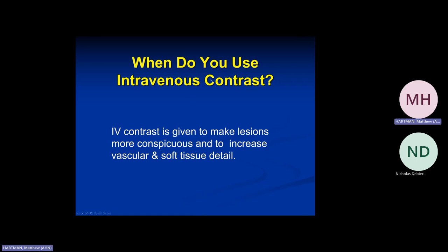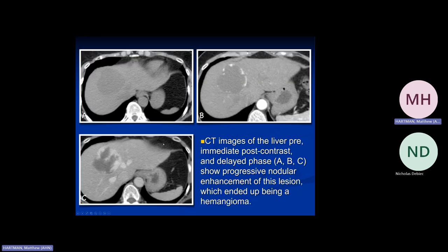When do you need intravenous contrast? Basically anytime you want a lesion or process to be more conspicuous, to increase vascular and soft tissue detail, or for anything vascular. Here is a liver lesion — hard to see on the non-contrast scan. In arterial phase it starts to fill in peripherally, and in portal venous phase it's really filling in. This is a hemangioma — a big bag of blood.